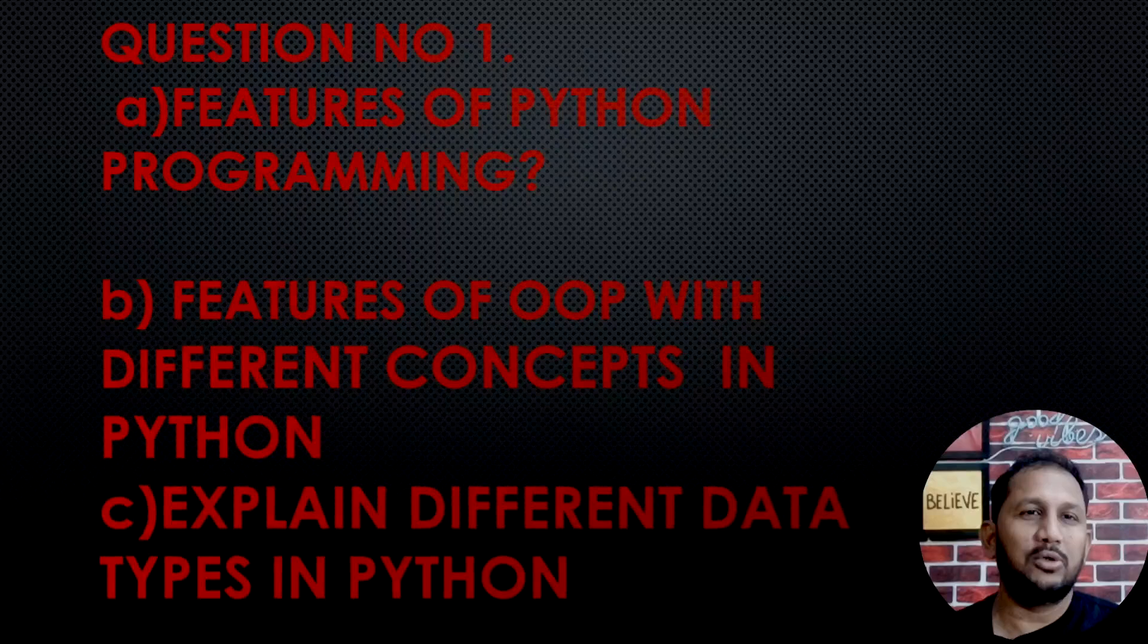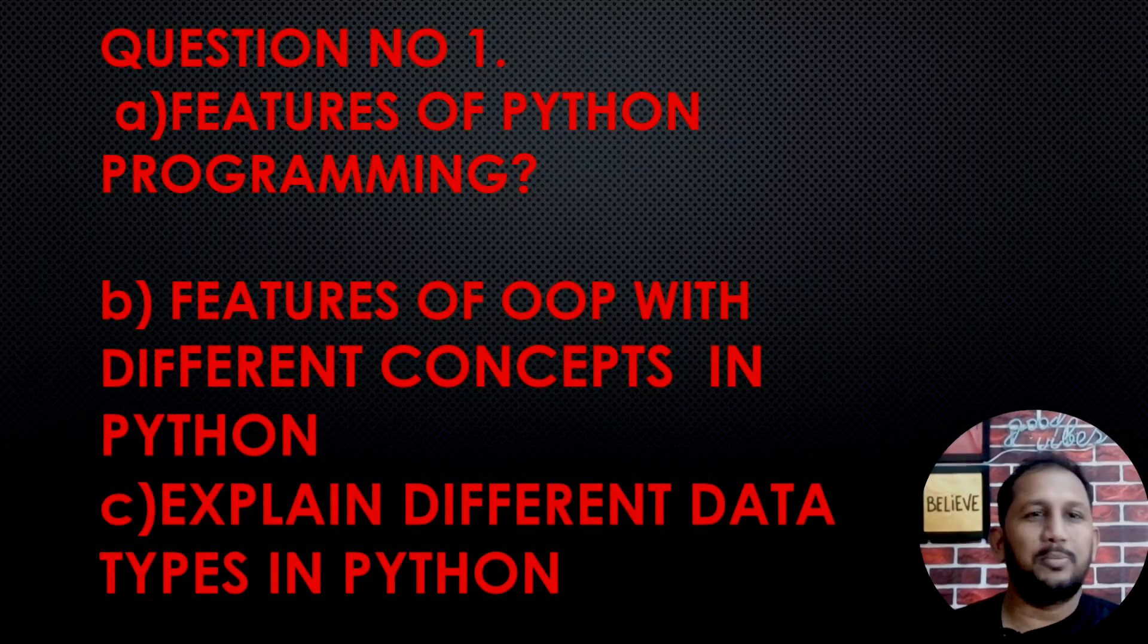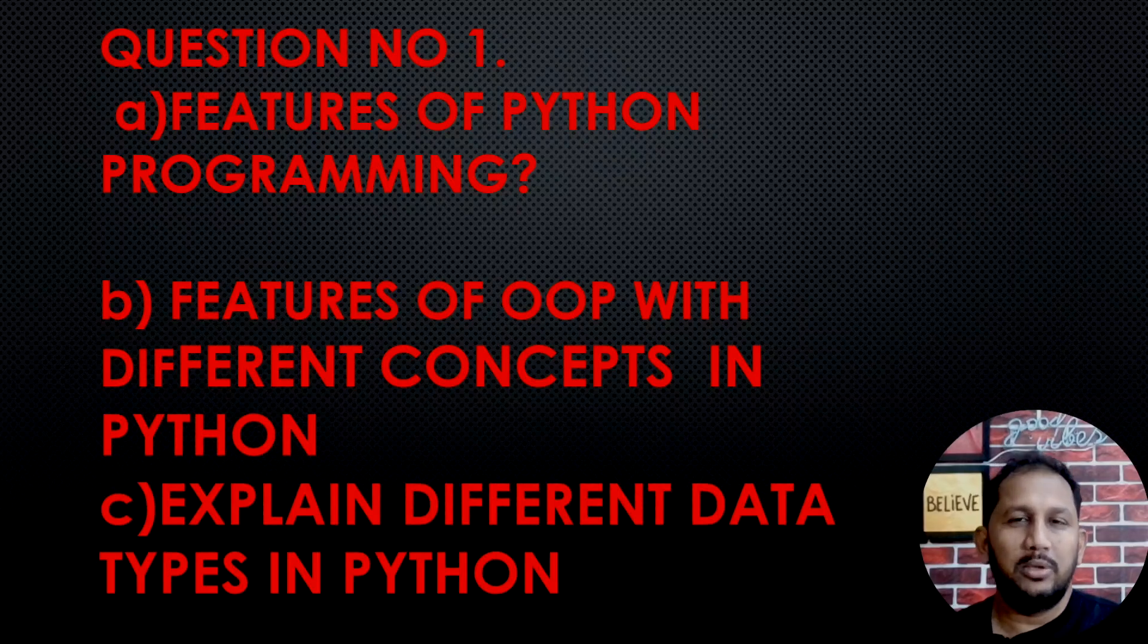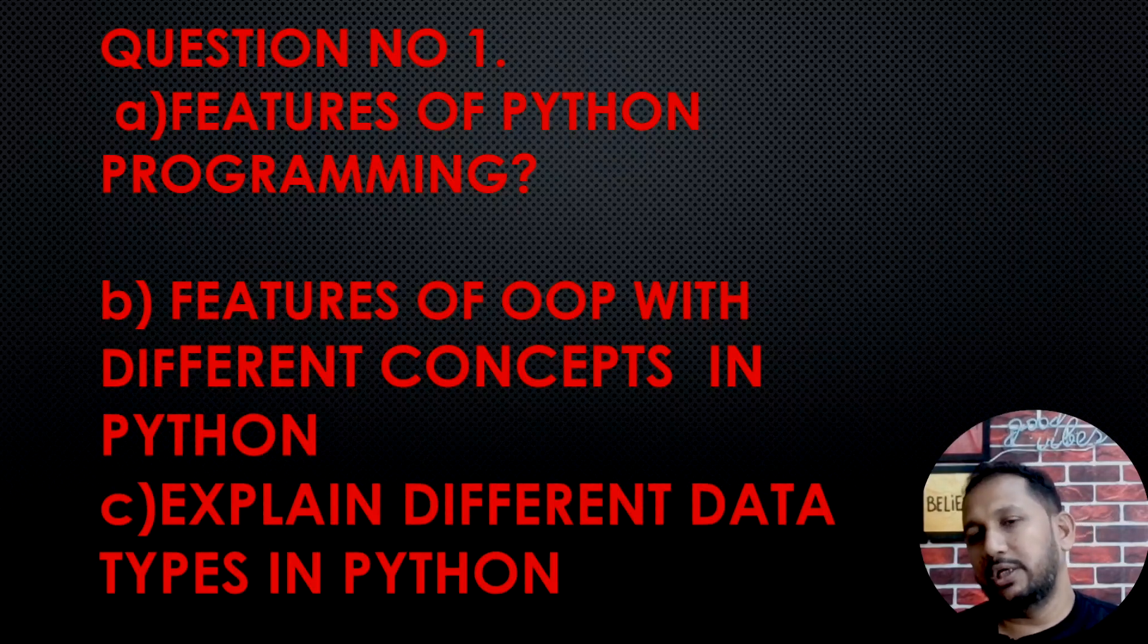The first important question is the features of Python programming. Python programming features include the language features, data types, and important concepts. Explain the features of OOP with different concepts in Python. OOP concepts include class, object, polymorphism, inheritance, abstraction, and data hiding. These features will be discussed in this point.